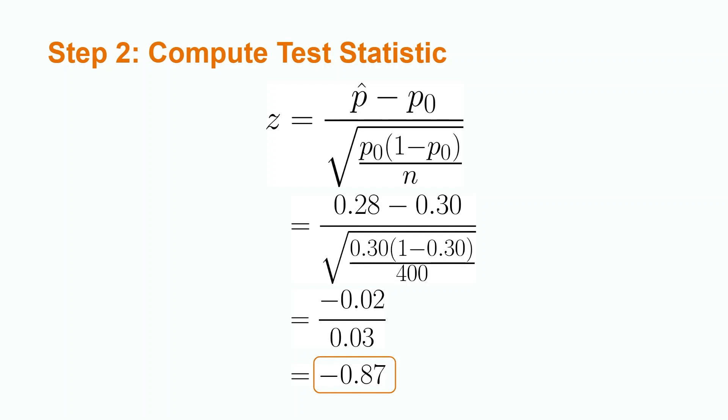Going back to our previous example about high school freshmen, let's say that we know that the local high school's proportion of freshmen is 0.27 and the school has a total of 400 students. In order to compute the z-test statistic, we would subtract 0.28 from our previously specified p₀ value of 0.30. We would then divide by the square root of 0.30 times one minus 0.30 divided by 400. This gives us a result of negative 0.87.